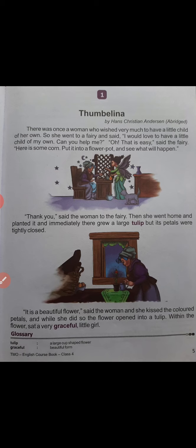Then she went home and planted the seeds into a flower pot. Immediately, they grew into a large tulip, but its petals were tightly closed. The lady put the seeds into the flower pot and a tulip plant grew up. Petals are the colorful parts of the flower — like the red parts of a rose, they are called petals or pankhuriyan. The petals were tightly closed, meaning the flower was still in bud form — bud means kali.